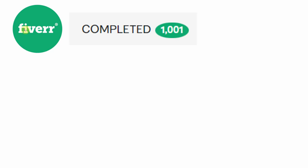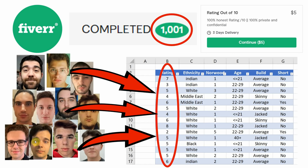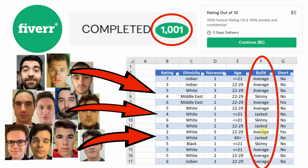On Fiverr, I've recently hit over 1,000 orders for my face rating out of 10 gig, and I've compiled all of those ratings into this single Excel spreadsheet. On top of this, I've also made note of each of their ethnic backgrounds, current level of balding, age brackets, body types, and if they mention they're 5'7 or below in height.